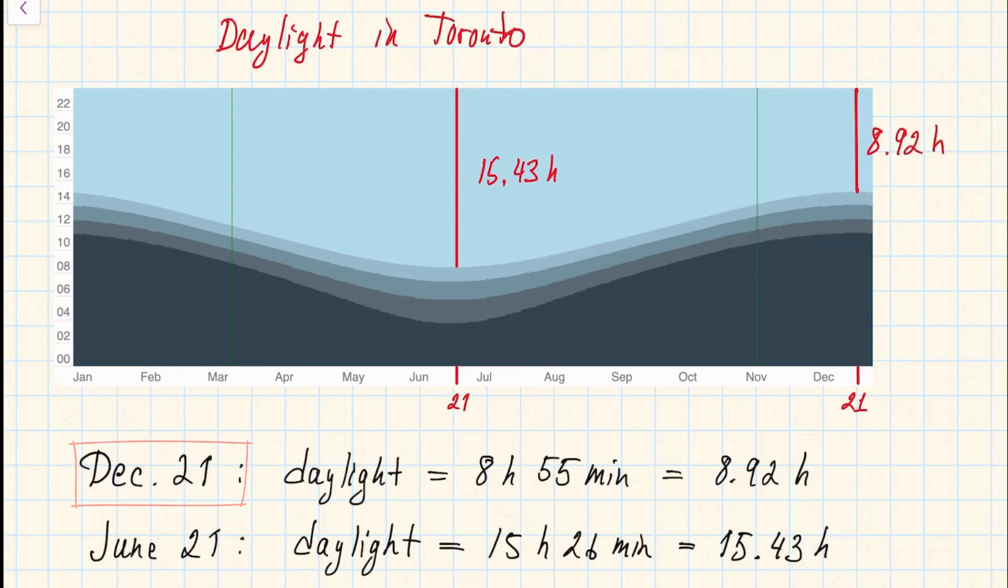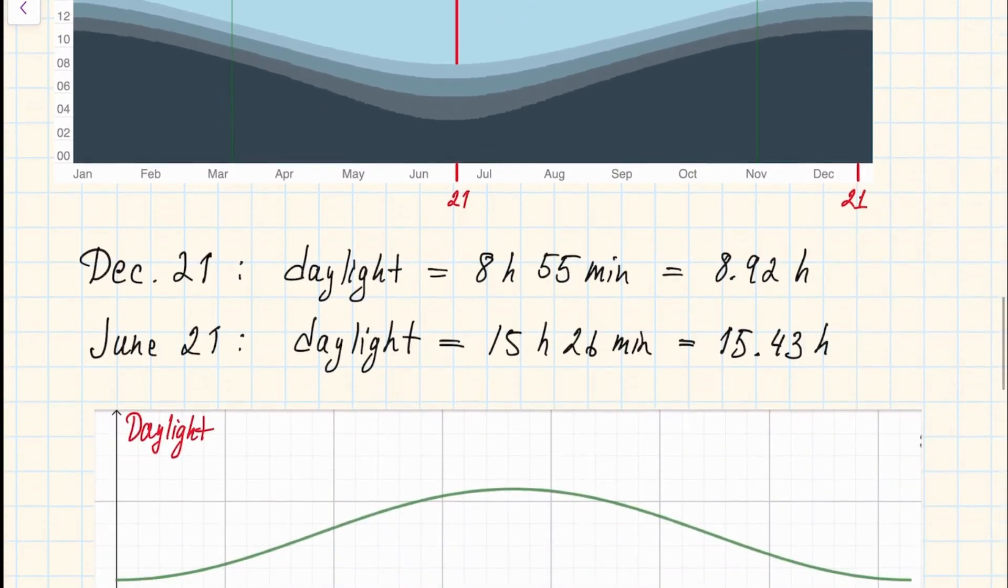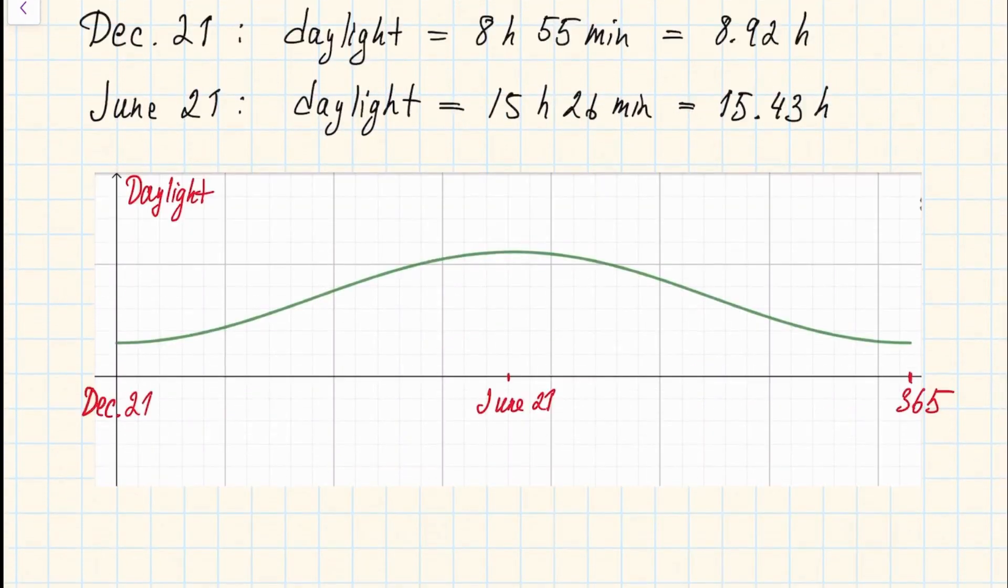The shortest day is on December 21st when the daylight is 8 hours and 55 minutes, and then again translating into hours it will be 8.92 hours. Now when trying to find a function that models this daylight, it's convenient to start from one of these days, so our time zero will be either December 21st or June 21st. Here I'm going to choose December 21st.